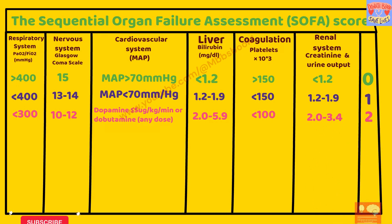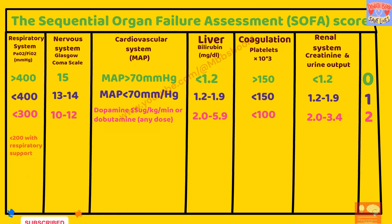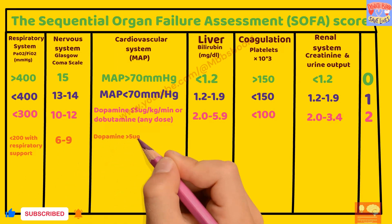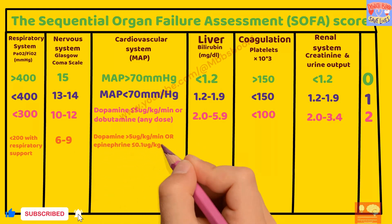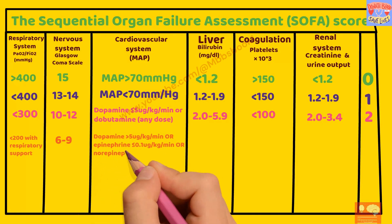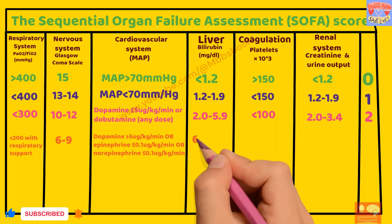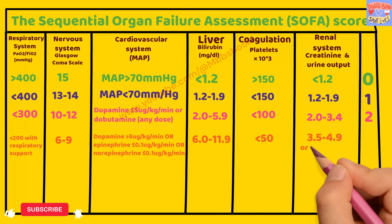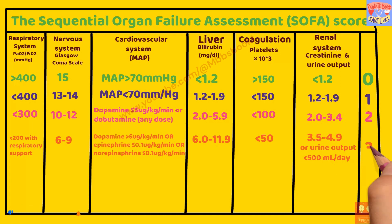If PF ratio is less than 200 with respiratory support, GCS is 6 to 9, patient is on dopamine more than 5 microgram per kg per minute, or epinephrine less than or equal to 0.1 microgram per kg per minute, or norepinephrine less than or equal to 0.1 microgram per kg per minute, bilirubin 6 to 11.9, platelet count less than 50,000, creatinine 3.5 to 4.9, and urine output less than 500 ml per day, then SOFA score will be 3.